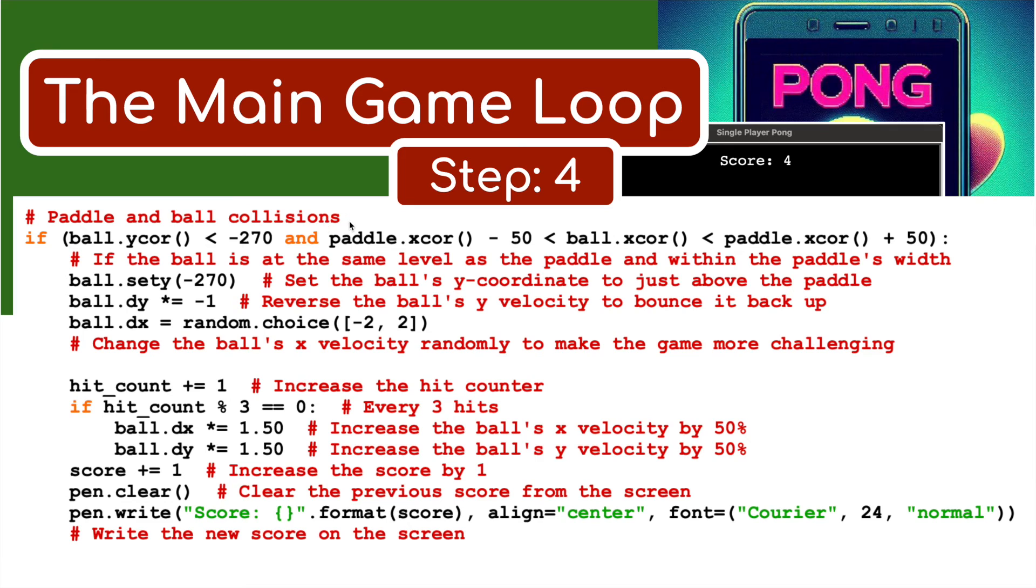Paddle and ball collision. If the ball and the Y coordinate is greater than minus 270, right down at the bottom, and the paddle's X coordinate minus 50 - if the ball is at the same level as the paddle, within the paddle's width, set the ball's Y coordinate to just above the paddle. Reverse the ball's Y velocity - bounce it back up. This will bounce the ball back up if it hits the paddle. And again, a random choice as to how fast and which direction the ball is going to go in.